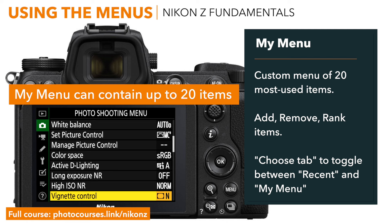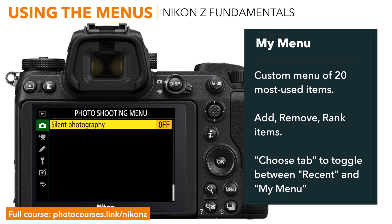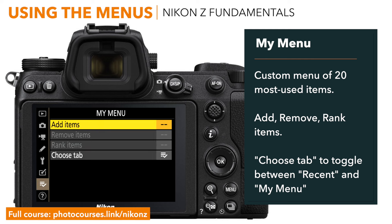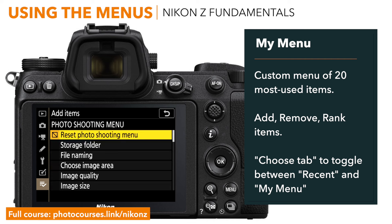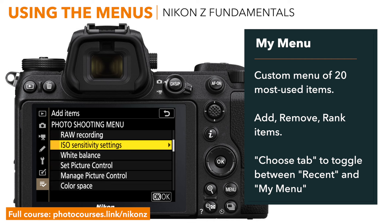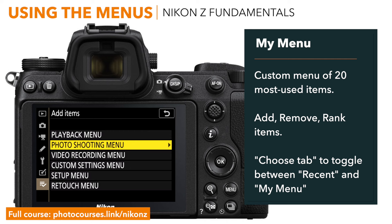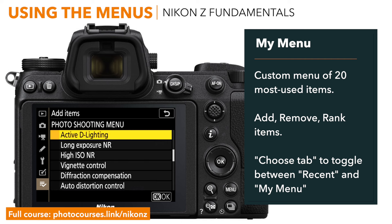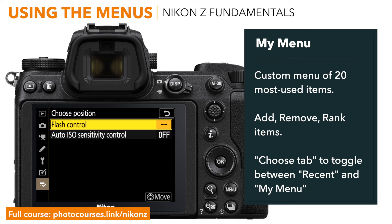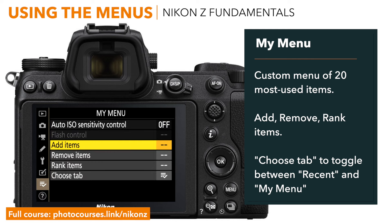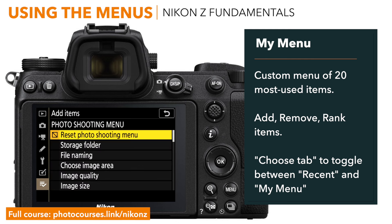So why should you have to scroll through all of those different menu pages to change those same 10 settings? You can just put them all in one menu so that you don't ever have to scroll through those menus again. If you go to my menu and select add items, you're going to choose from the list what you want to add to your custom menu and press OK. When you repeat that process and have more than one item in here, you're going to use the multi selector up or down to arrange that item in the order that you want. You can make your most commonly used menu items at the top and the ones that you don't use quite as much down at the bottom. Some items cannot be added to your my menu, like reset. You're going to see a crossed out checkbox next to those items that you cannot add.